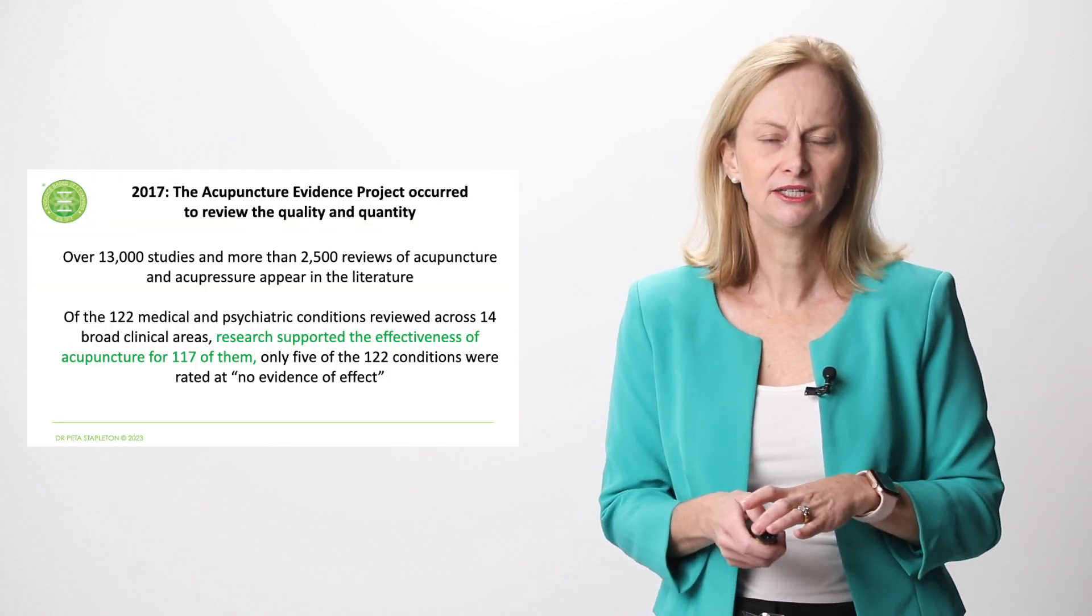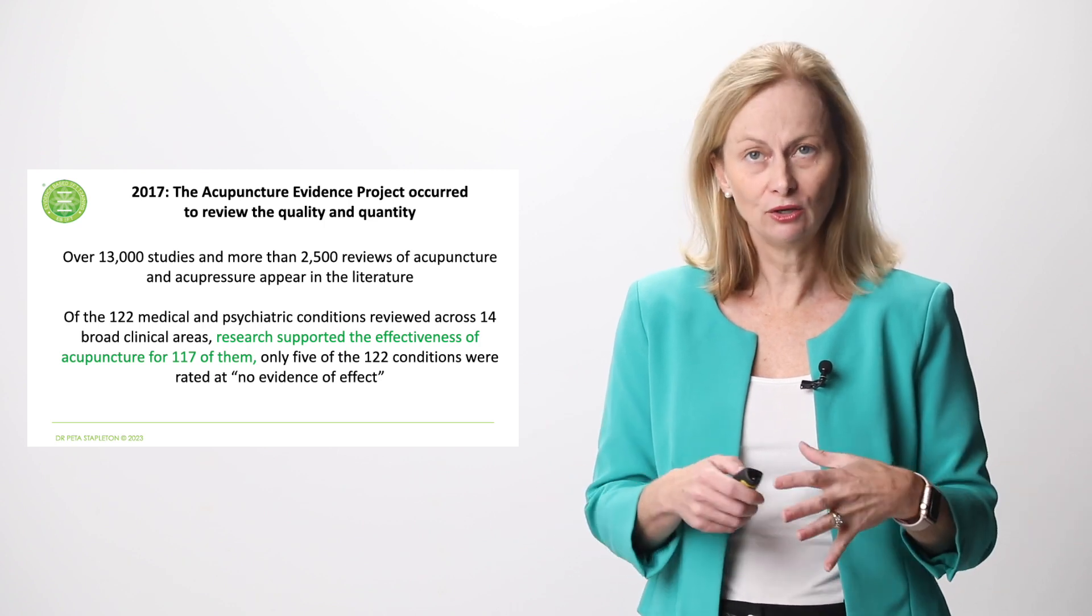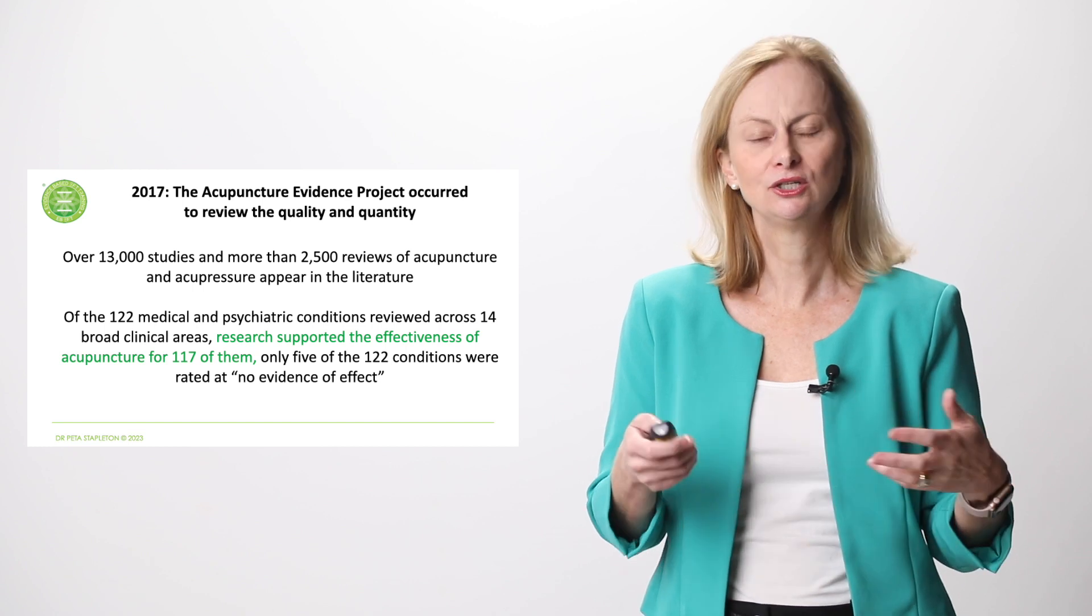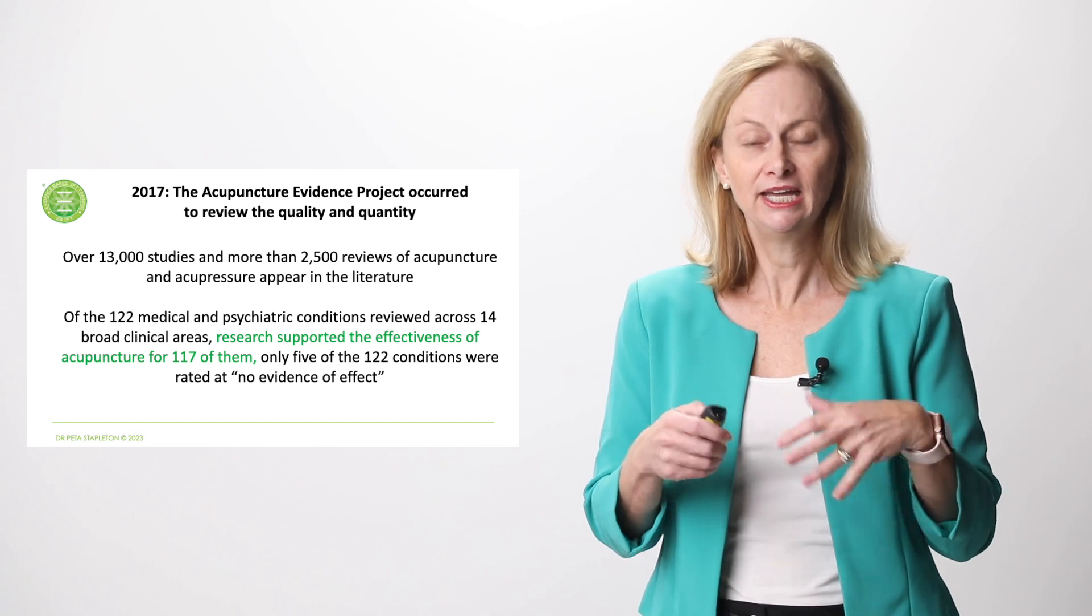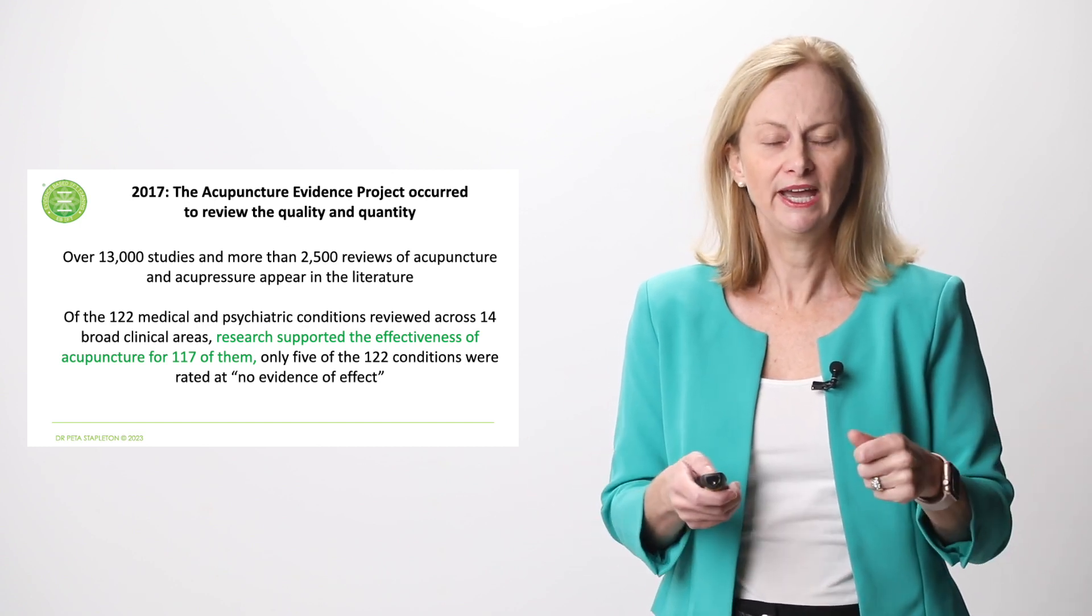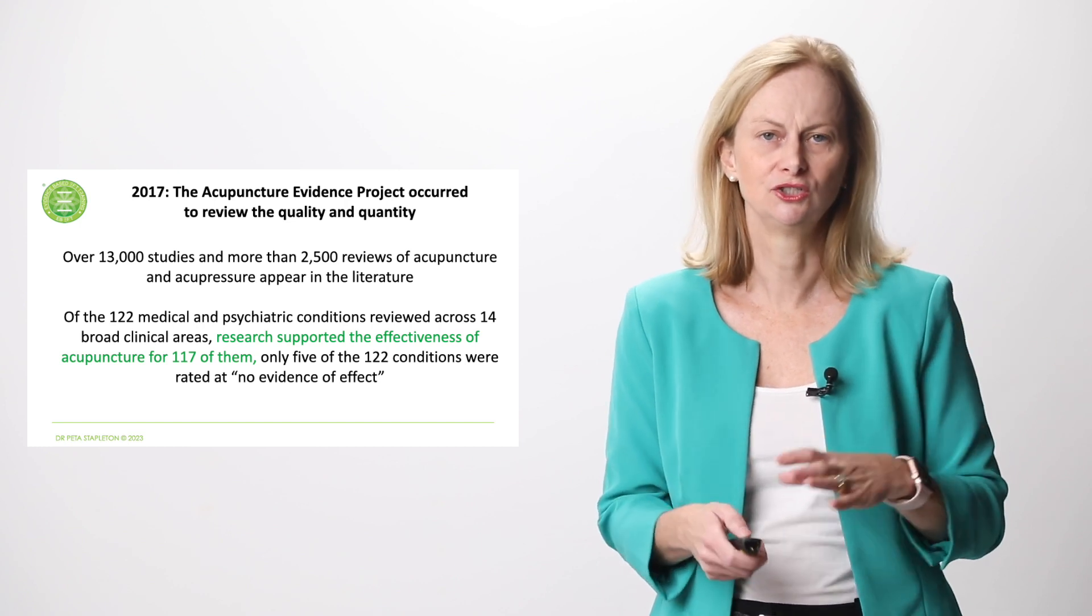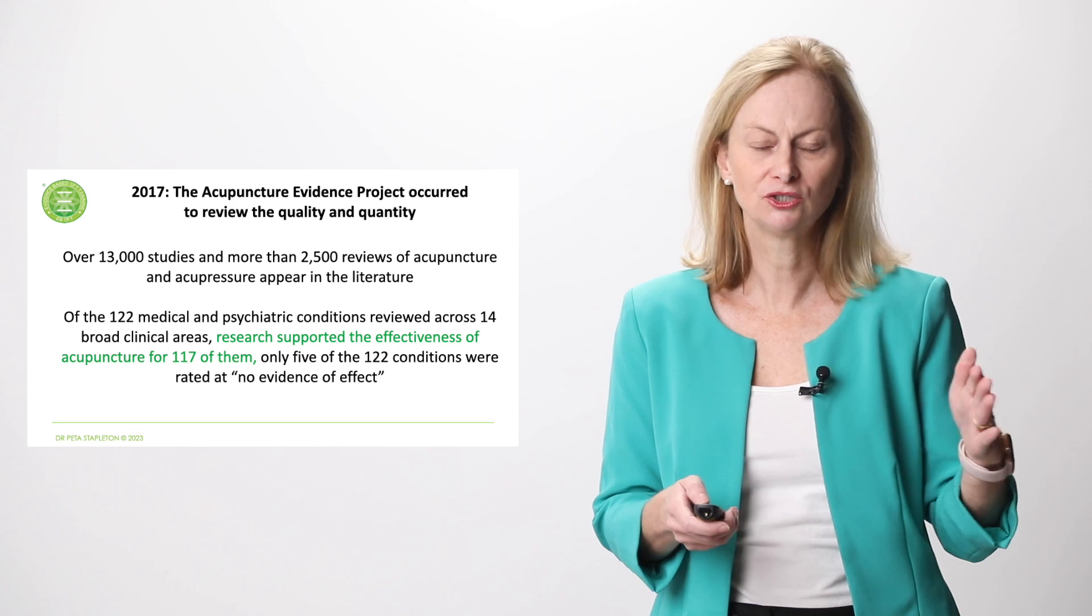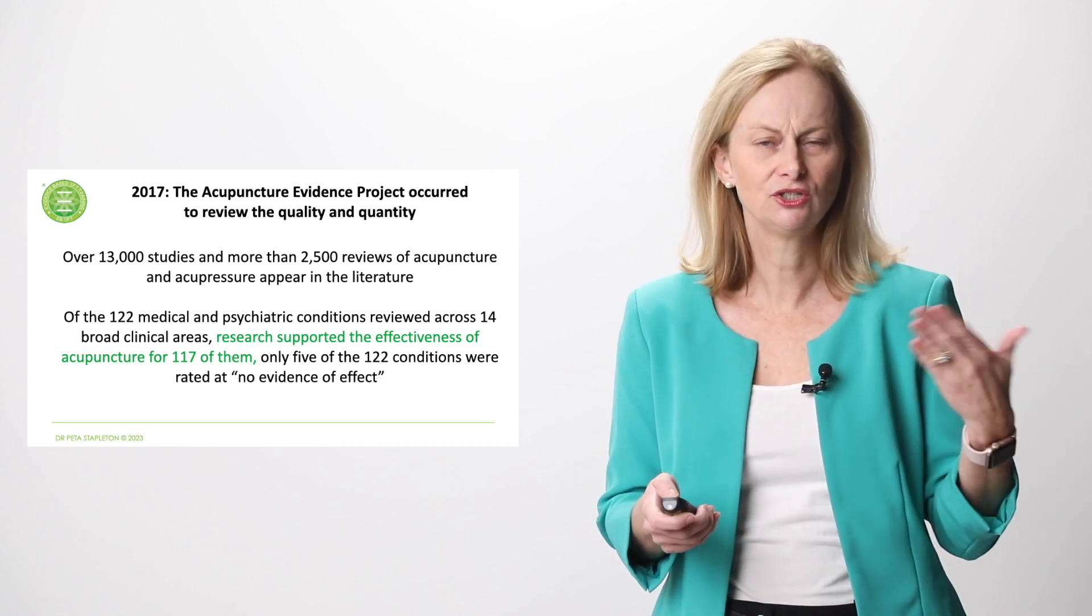So there was a study done in 2017 called the Acupuncture Project that looked at 13,000 studies and 122 medical and psychiatric conditions for acupuncture. And it actually did show that out of all of those studies, 122, only five didn't show any effect. And indeed for the other 117, acupuncture had the effect that was intended. So certainly that research has been growing. Still brings us back to, but how does this work?